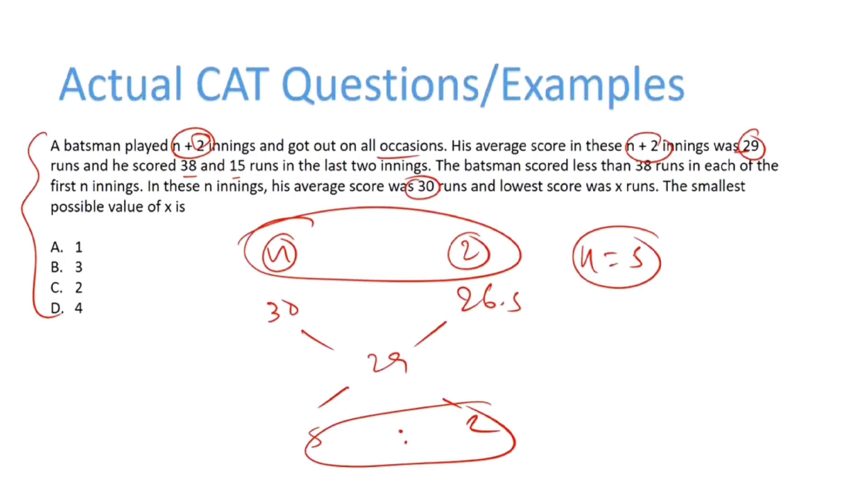So in the first n innings, or the first 5 innings, he scored less than 38, and another score was x. We have to minimize this x score. What we can do is maximize the 4 scores less than 38; the max that I can take is 37.